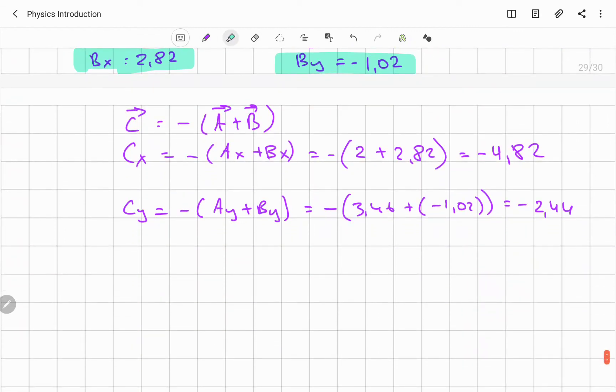So this will be x component, this will be y component. You can write it in terms of unit vector. So unit vector for C will be negative 4.82 i minus 2.44 j. This will be same vector in terms of unit vector.